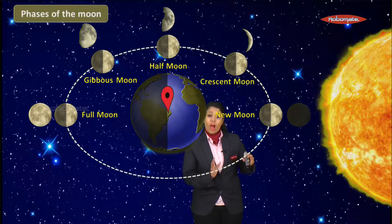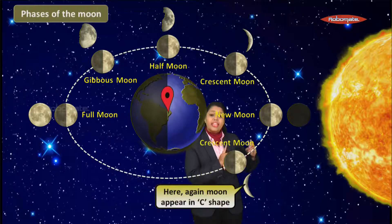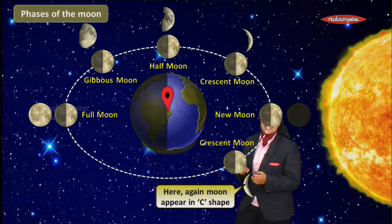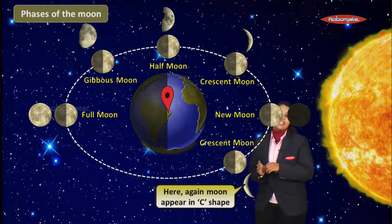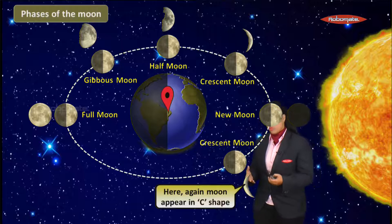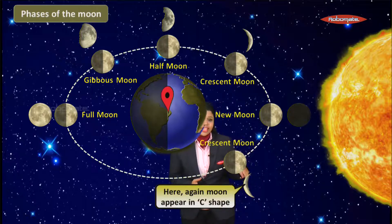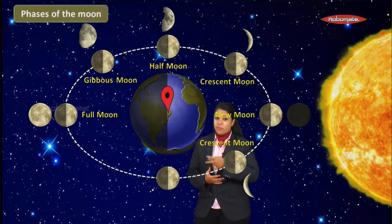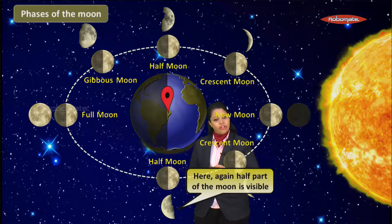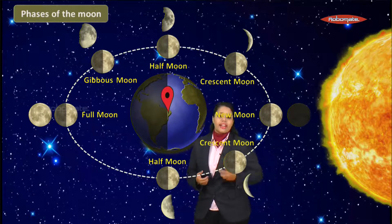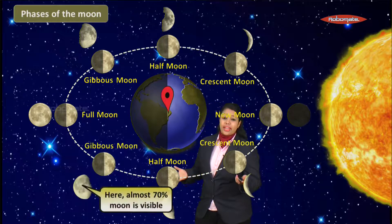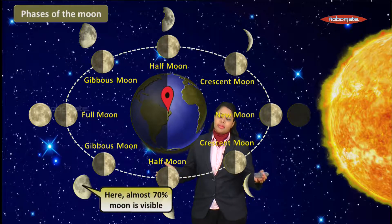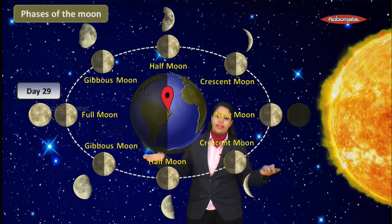After the new moon, on the 15th day, the Moon's visible size begins increasing again. Now instead of waning, we call it waxing moon. First it becomes a waxing crescent moon, then it grows into a quarter moon or half moon again, and then a waxing gibbous moon where the Moon is about 70 percent visible to us.